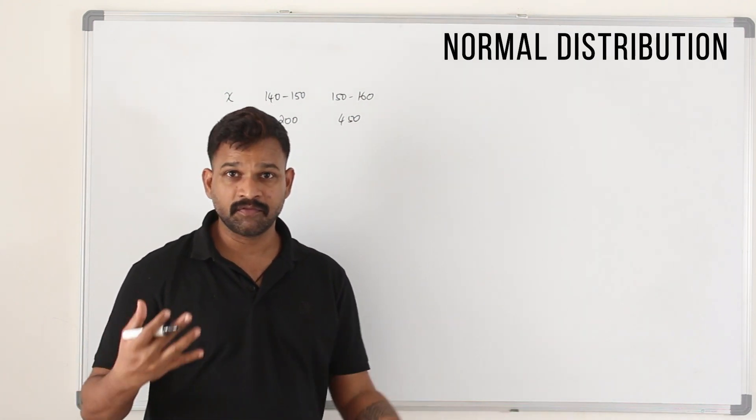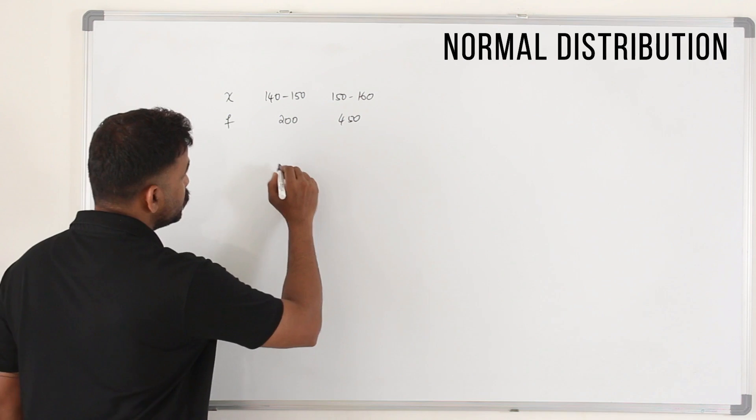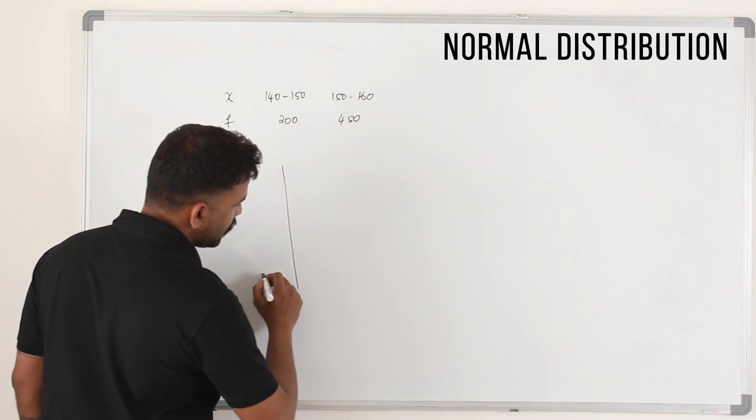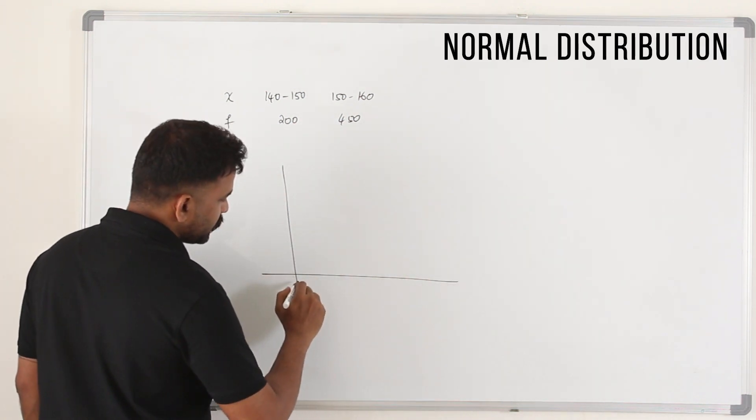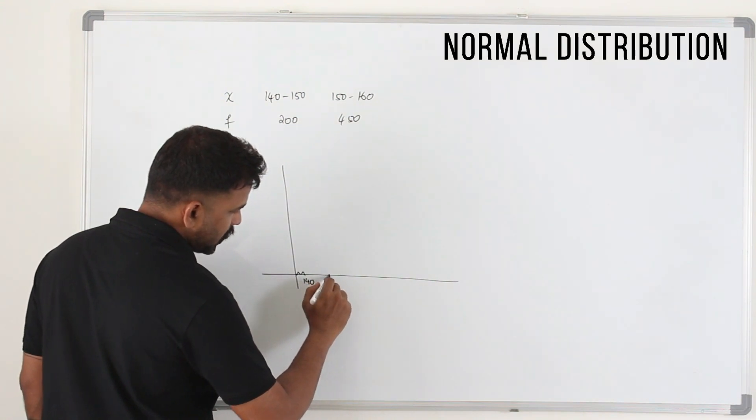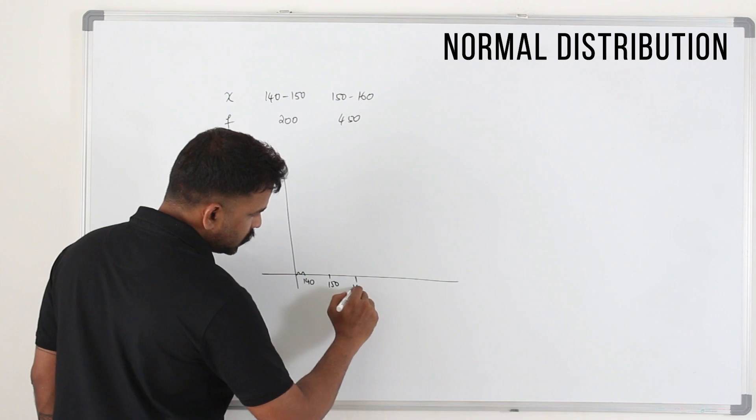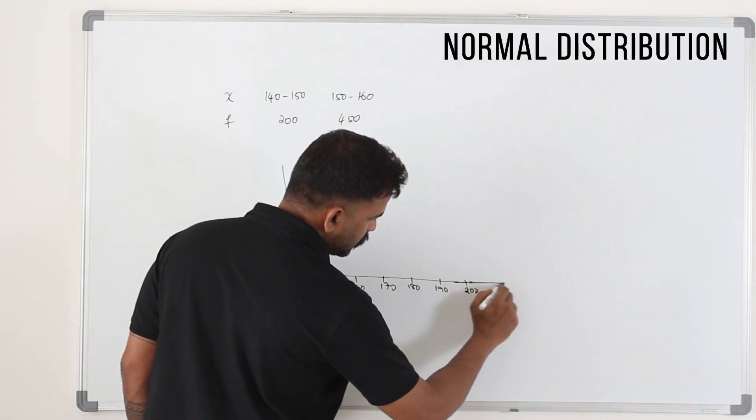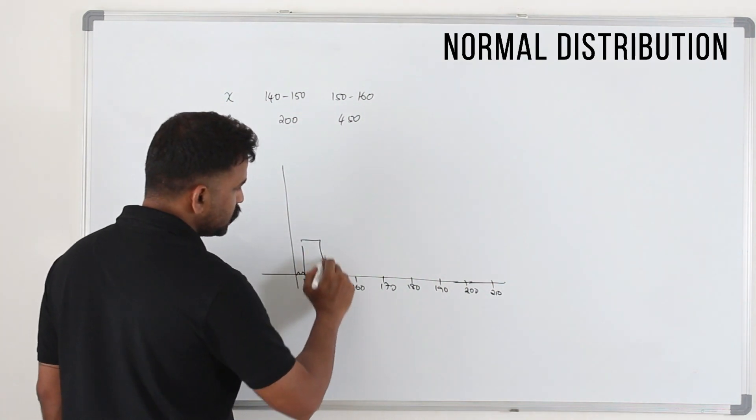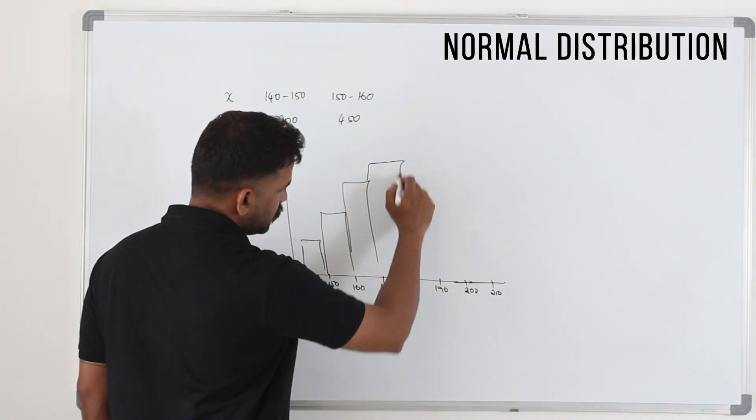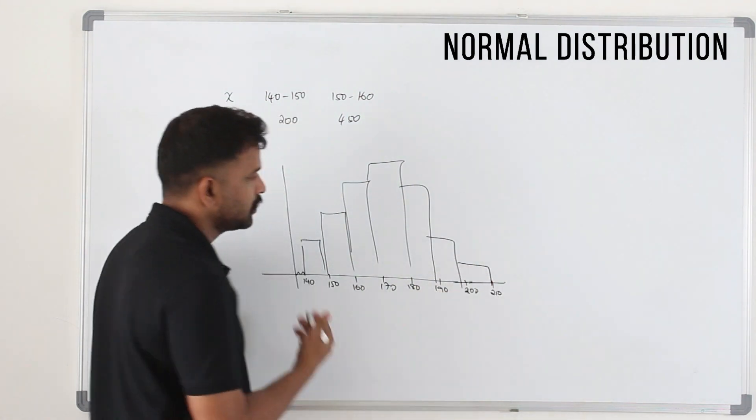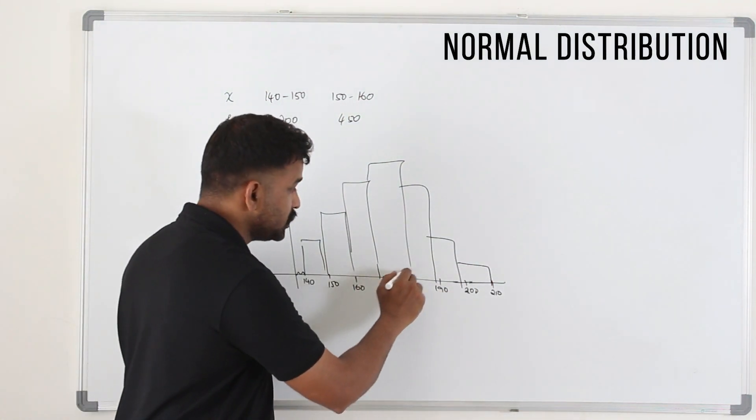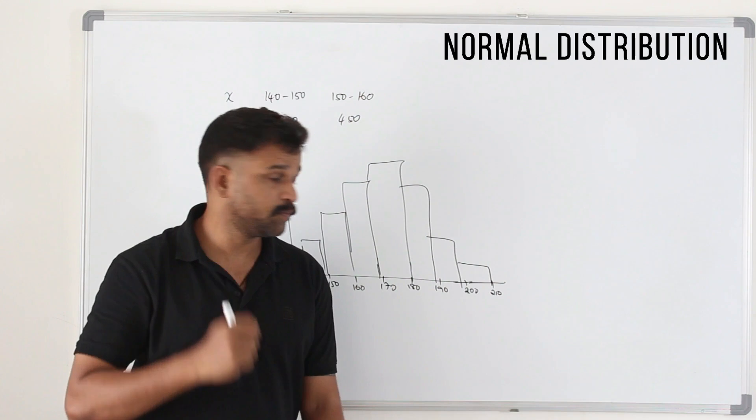We usually draw a histogram for continuous random variables using frequency density and class width. Let's say you're starting from 140, 150, 160. So you get a histogram like this. You can draw a histogram for this data. This will make a bar.